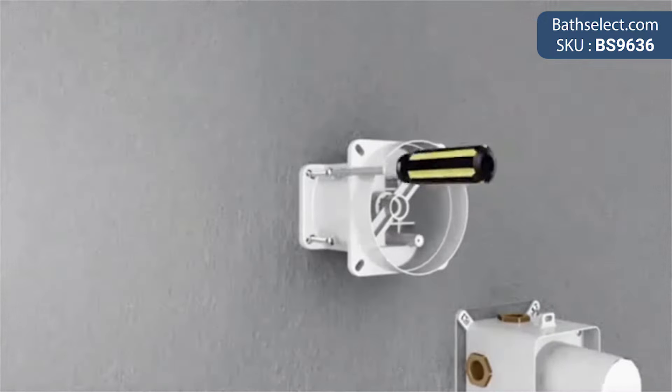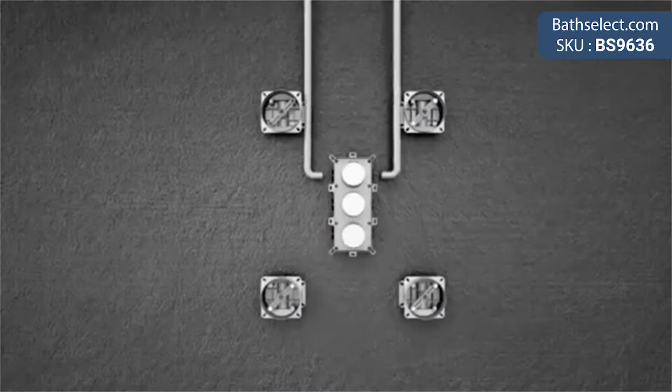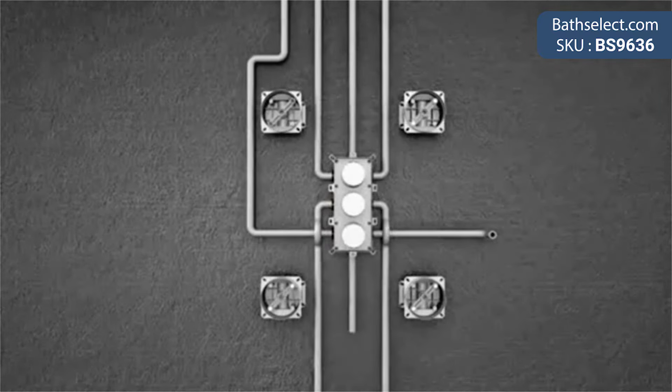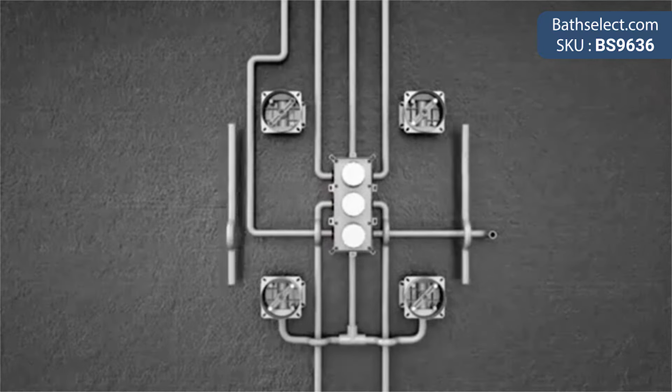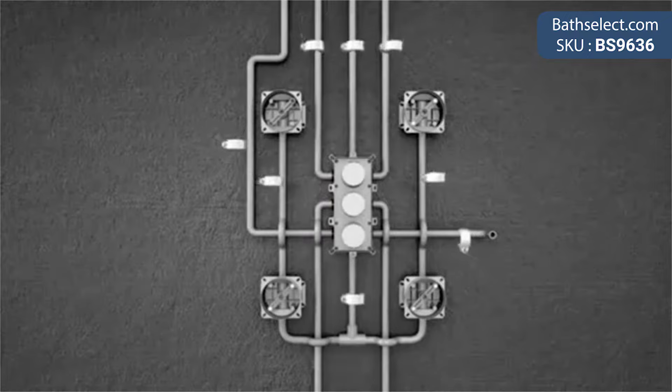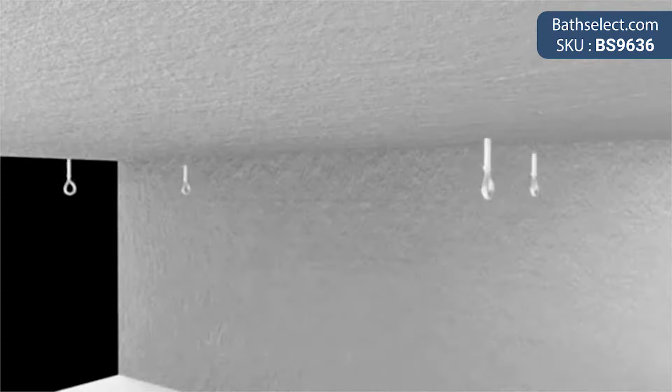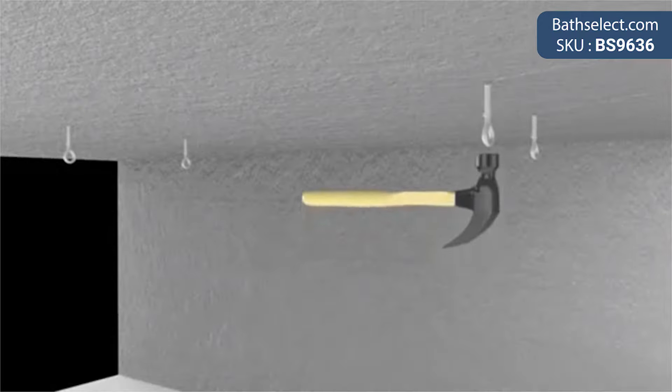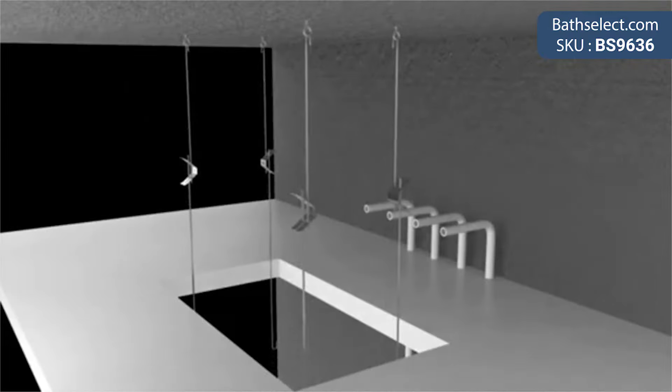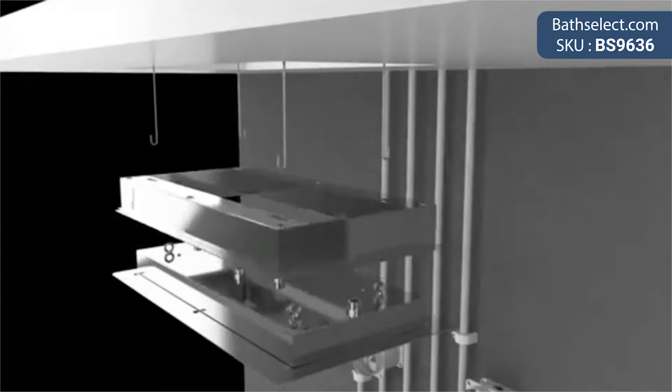LED shower head specifications: Type - bathroom shower, product code BS9636, brand - Bass Select, installation type - ceiling mount. Features rainfall shower head, material - stainless steel, surface finish - chrome polished, shower shape - square.